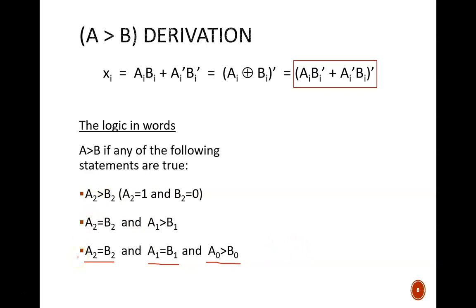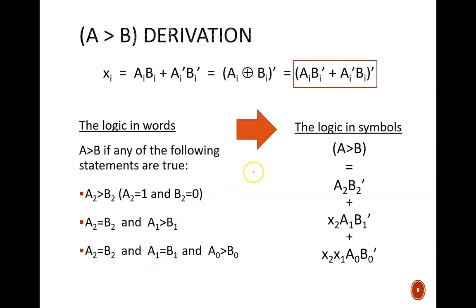Now let's convert that to Boolean algebra. The first bullet is represented by the expression A2 and B2 prime. This product term will only be true if A2 equals 1 and B2 equals 0. The second bullet is represented by X2 and A1 and B1 prime. The X2 indicates if the most significant bits are equivalent. If they aren't, then this whole product term goes to 0 and does not matter. If they are equivalent, then A1 B1 prime indicates if A1 is larger than B1.